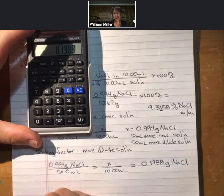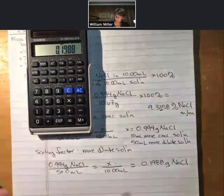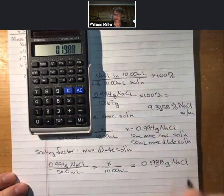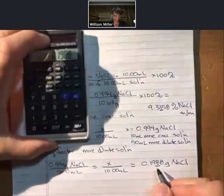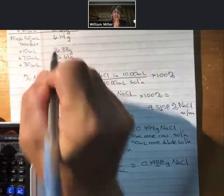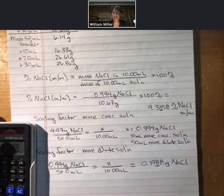0.1988 grams of sodium chloride, only 3 sig figs, so underline that third sig fig. And then, this will be the numerator for your calculations involving percent composition of your more dilute solution.